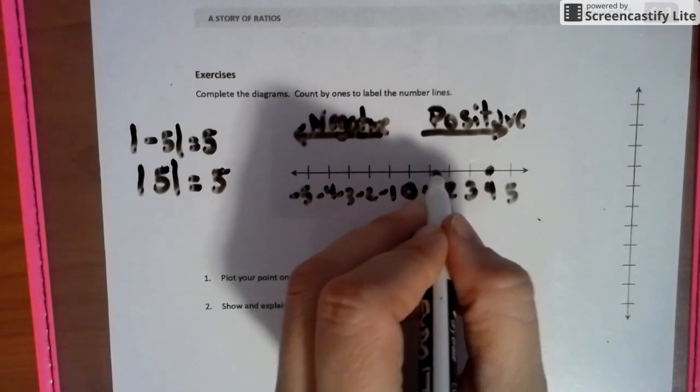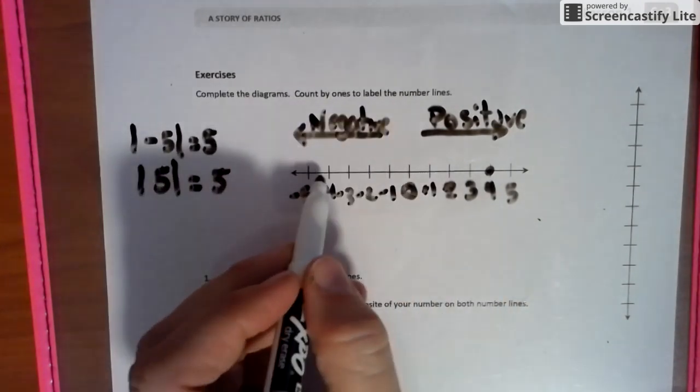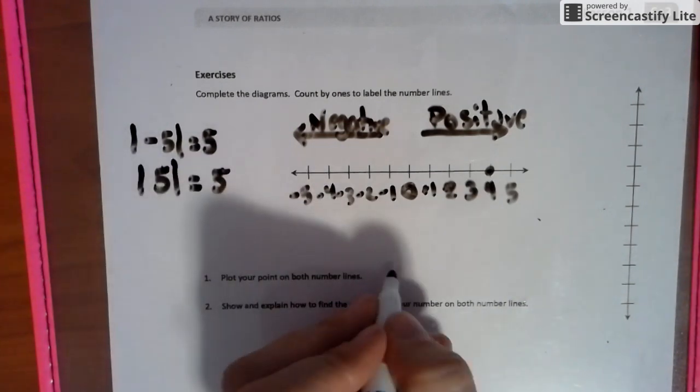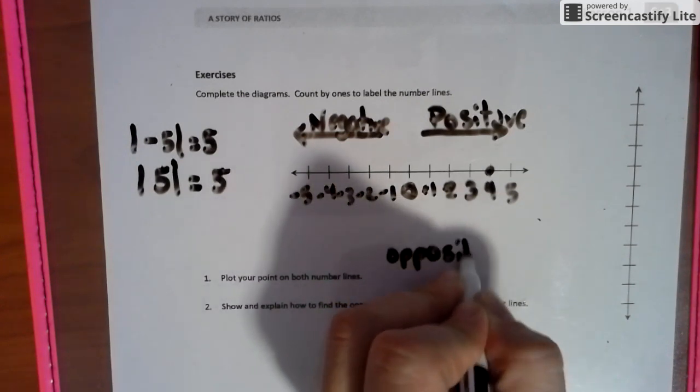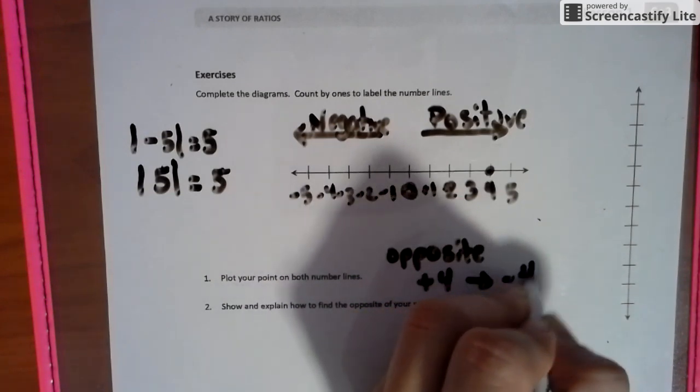And we say, what's the opposite of the positive four? Well, that's four jumps away from zero here. So four jumps away from zero here would make our opposite of four a negative four. So opposites: positive four, negative four.